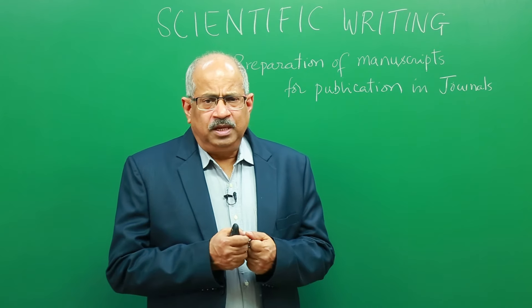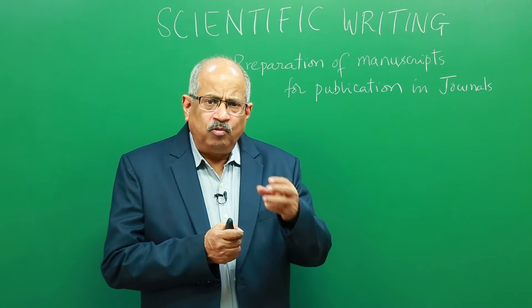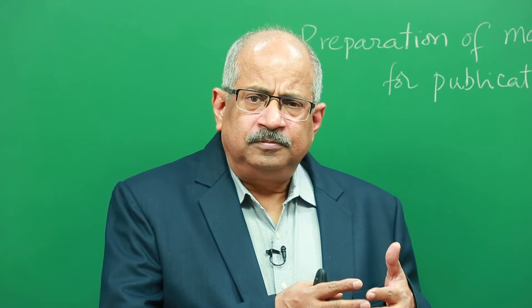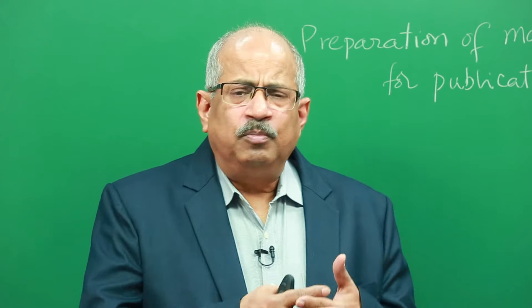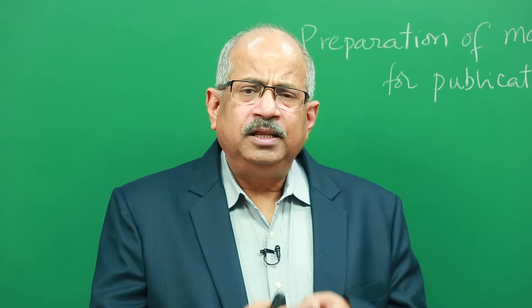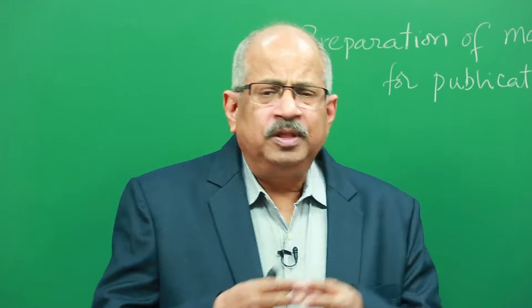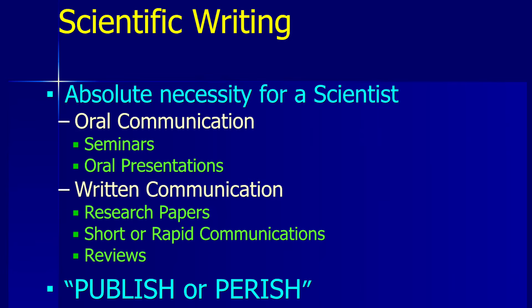Once you make a publication, your name will be known and you have one publication to cite in your curriculum vitae. The measure of an individual's scientific capability is the number of papers published and the type of journals in which they are published. It is necessary for a scientist to develop a career, and for developing that career it is necessary to publish papers. There is a scientific dictum referred to as 'publish or perish'.